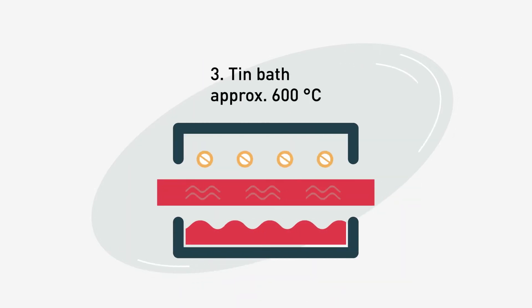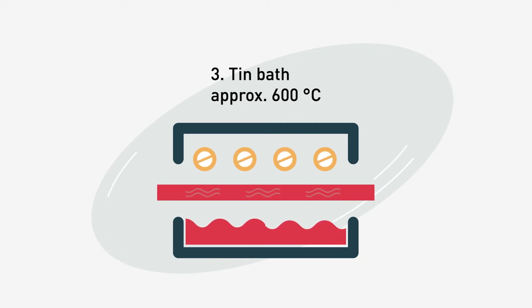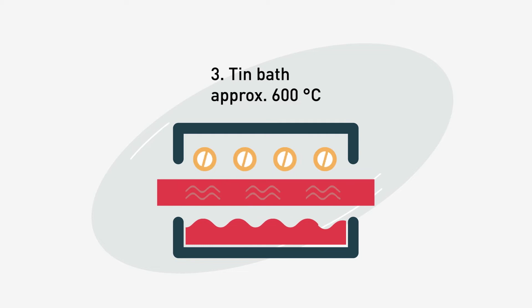Then molten glass slowly pours out like lava onto a bath of molten tin. Afterwards it is either stretched or compressed using a top roller depending on the thickness of glass required.